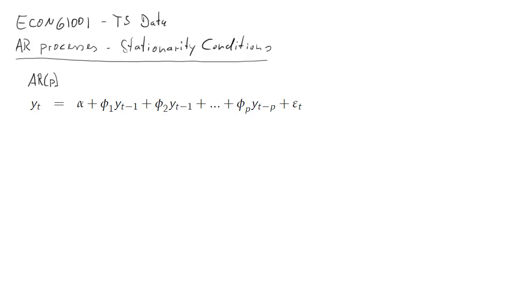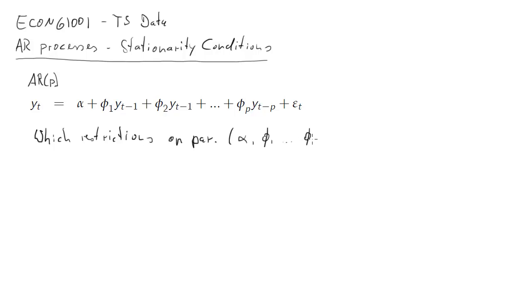In this clip I will explain how to derive the stationarity condition for an autoregressive process. We'll start with this AR(p) process here, which is just copied from the lecture. The question is what conditions — or what restrictions — are required on the parameters alpha and phi_1 to phi_p for the process y_t to be stationary.